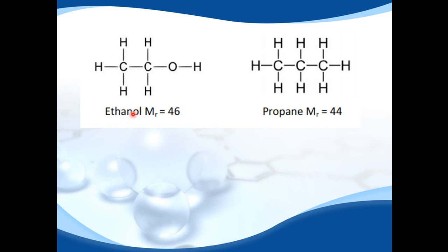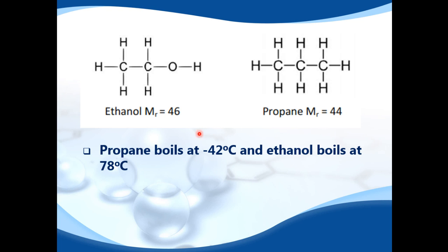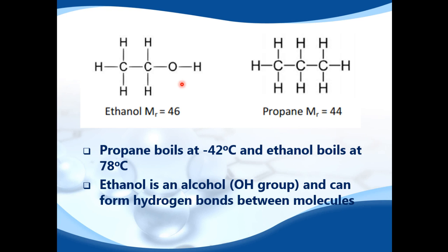Let's look at an example. We have ethanol on the left and propane on the right. The molecular mass is about the same — ethanol has a molecular mass of 46 and propane has a molecular mass of 44. Propane boils at negative 42 degrees C, and ethanol boils at 78 degrees C. So why is the boiling point of ethanol so much higher than that of propane? If you look at the functional group, ethanol has an OH group. If you have a hydrogen bonded to an oxygen, the ethanol molecules can form hydrogen bonds, and hydrogen bonds are the strongest type of intermolecular force, which gives it a higher boiling point. Ethanol is an alcohol — it has an OH group and it can form hydrogen bonds between its molecules, giving it a much higher boiling point than something with a similar molecular mass.